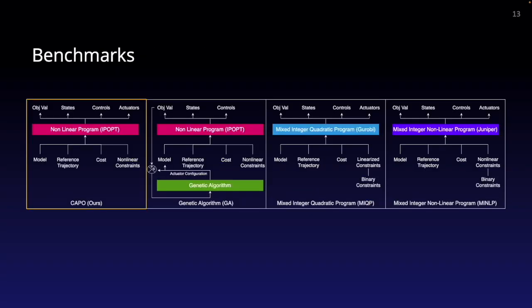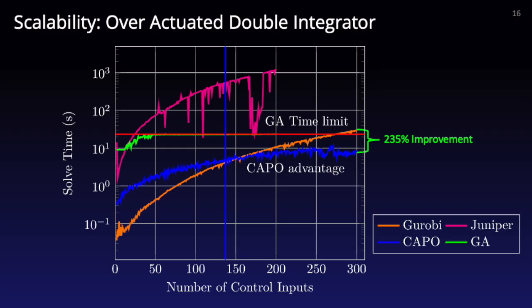We compare CAPO to three baselines: a bi-level genetic algorithm, a mixed-integer quadratic program with linearized dynamics constraints, and a mixed-integer nonlinear program. The scalability performance of the four methods is compared empirically using an overactuated double integrator problem. This plot shows that CAPO maintains favorable performance as the number of actuators increases, and outperforms all other methods as the number of binary variables passes 125.